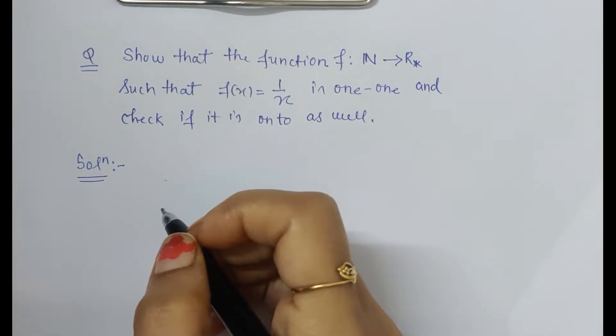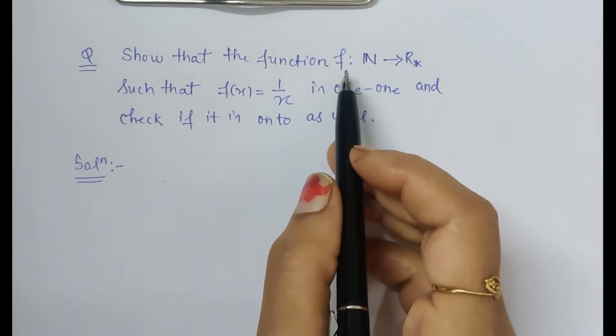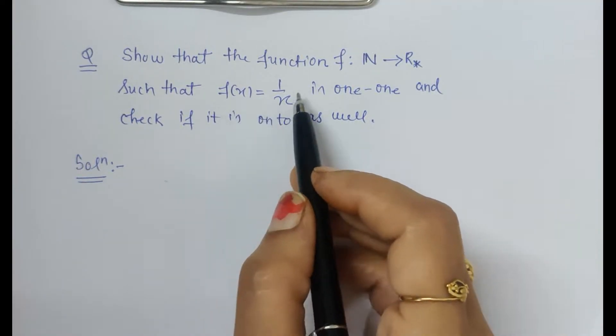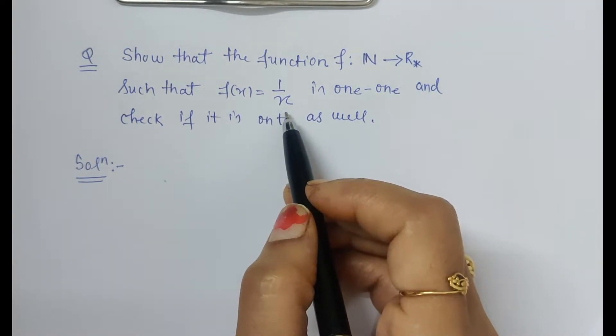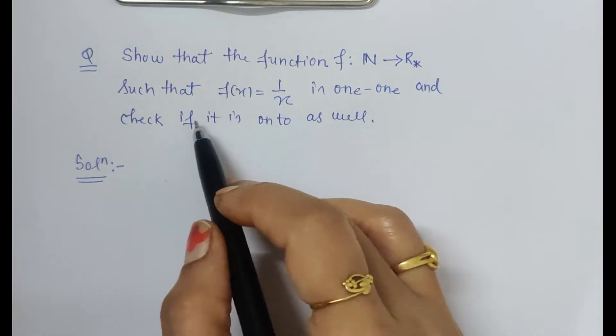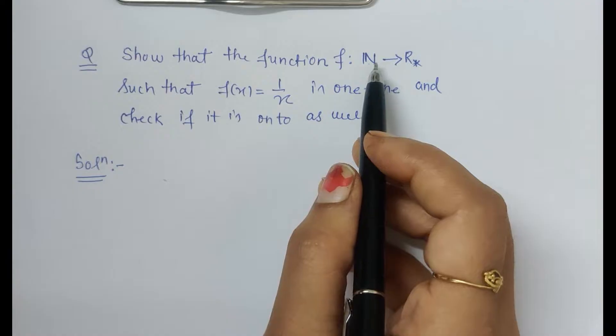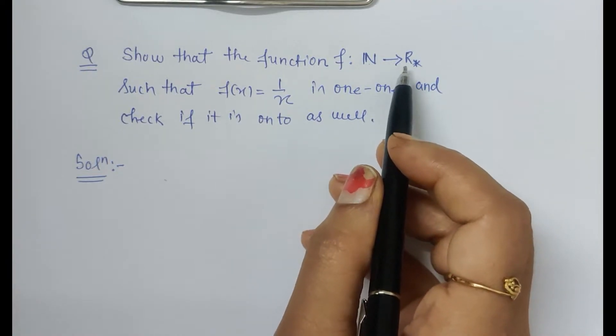Hello friends, in this question we have to prove if the function is invertible or not. It is given that the function is f(x) = 1/x. First we have to check if it is one-one as well as onto. The domain is the set of natural numbers and the codomain is the set of all positive real numbers.